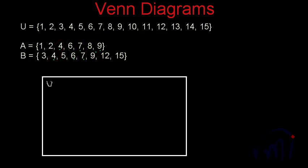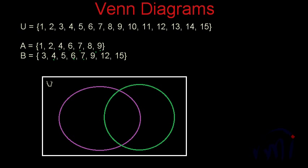That means set A and set B will have some overlapping area, because in any set the elements can be written only once, and so is the case with the universal set. So I will draw two overlapping circles for set A and set B — set A in purple and set B in green. I will first fill all the common elements in this overlapping area: 4, 6, 7, and 9. These four elements are common to both set A and B, so they lie in both circles.